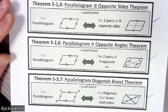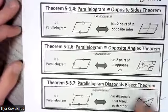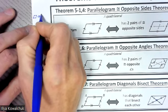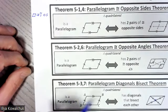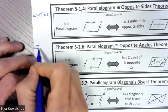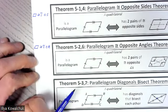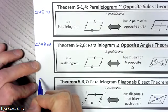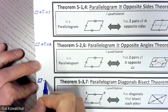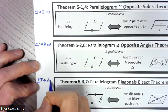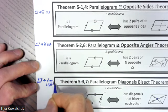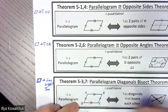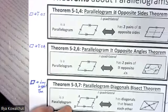Here's how we abbreviate these theorems. A parallelogram gives us congruent opposite sides. A parallelogram gives us congruent opposite angles. And a parallelogram gives us the Diagonals Bisect Theorem. You can use these abbreviations or write out the full name — whichever you prefer — but make sure you know them.